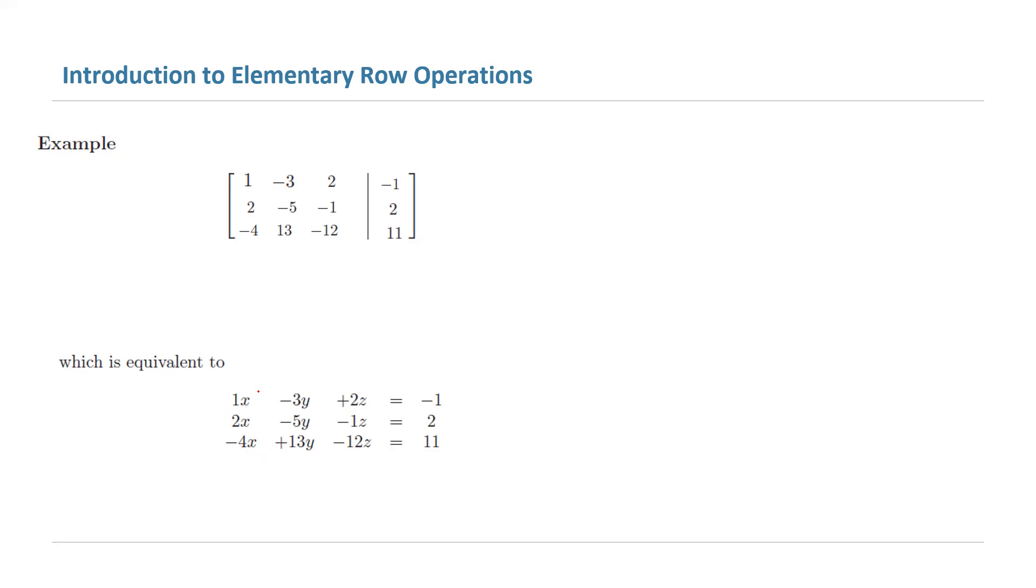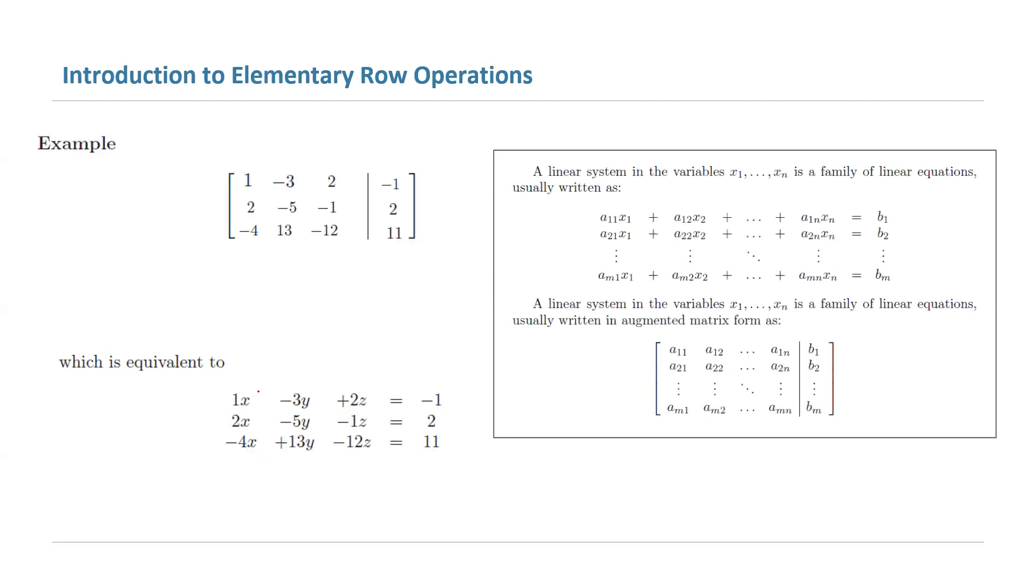This is called the augmented matrix. In general, if you have a system of linear equations, you can form an augmented matrix by listing all coefficients on the left-hand side. We usually use a vertical line to separate the coefficients from the constant terms, and constant terms are on the right-hand side.